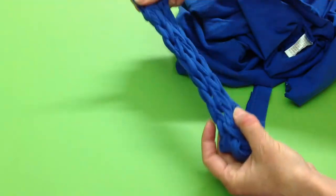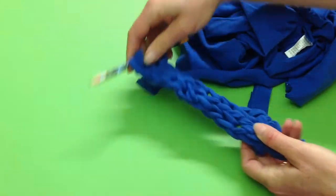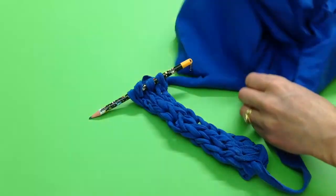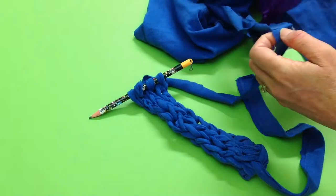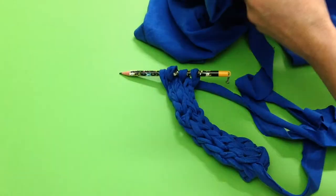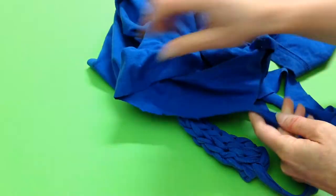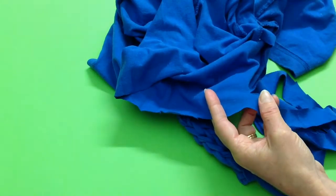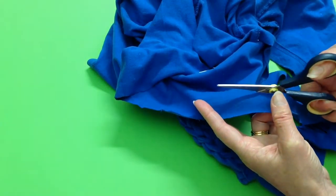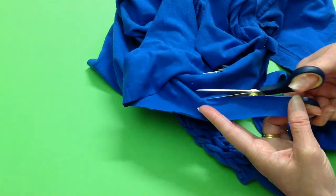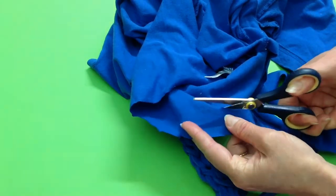You can even finger knit with an old t-shirt. This works out really thick. And again, I've just cut an old t-shirt into a thin ribbon, going round and round from the hem of the shirt.